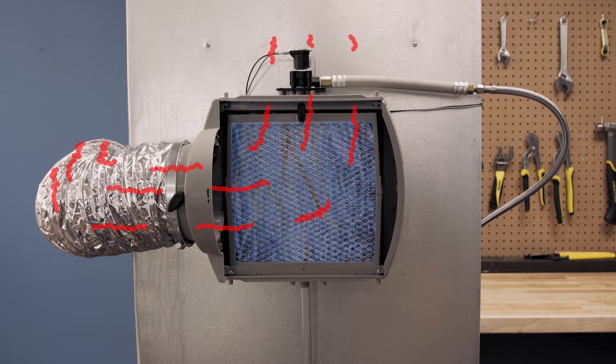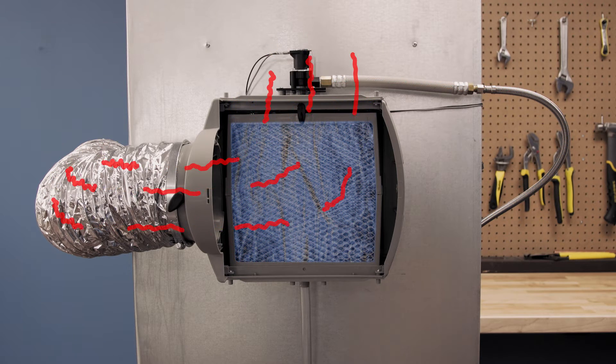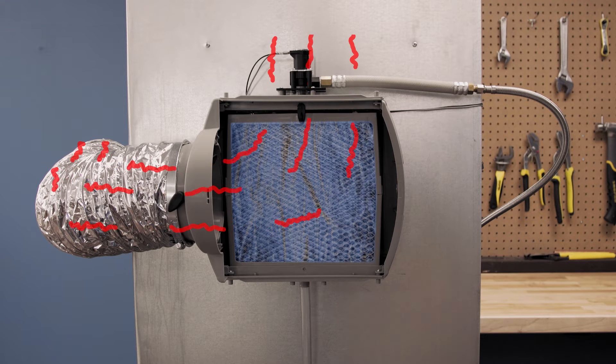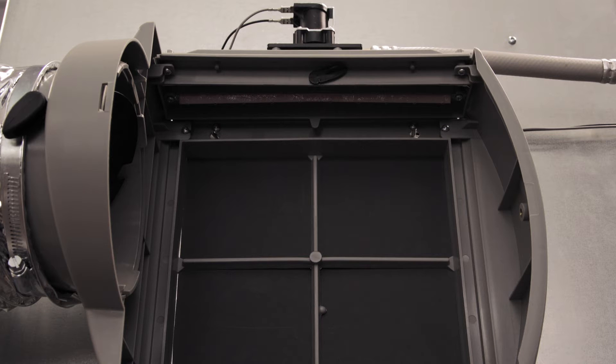As air flows over the pad, it picks up moisture and is distributed around your home by your furnace. Over time, calcium and mineral deposits can build up on the diffuser, which can prevent the pad from completely saturating with water.